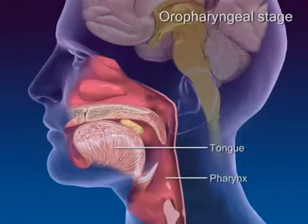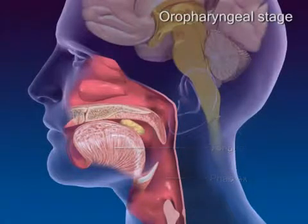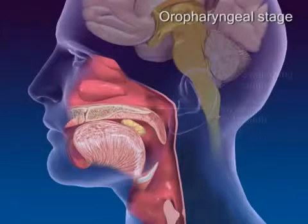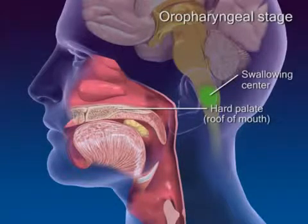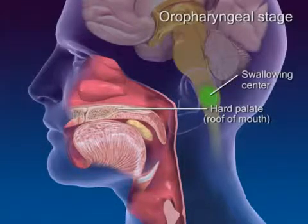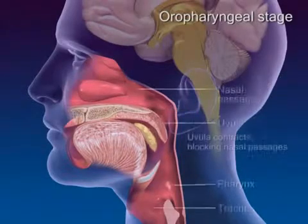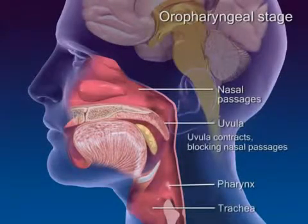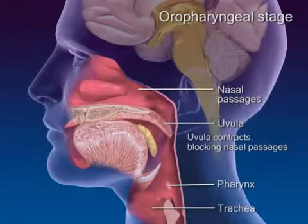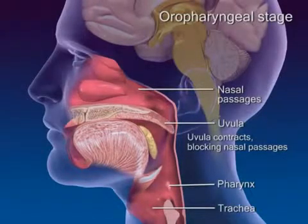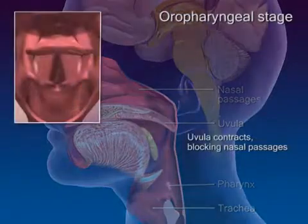In response to activation of pharyngeal pressure receptors, the swallowing center in the medulla initiates reflexes that prevent food entry into respiratory passageways. The uvula contracts, which blocks the nasal passages from the pharynx.